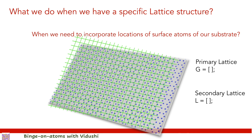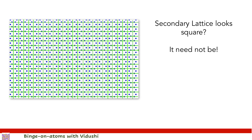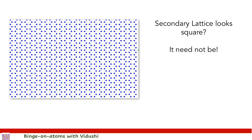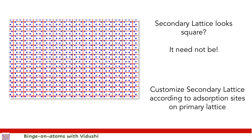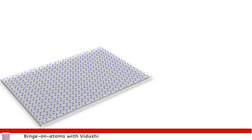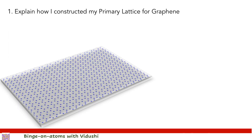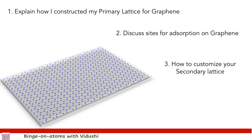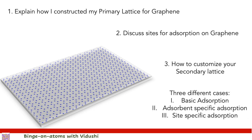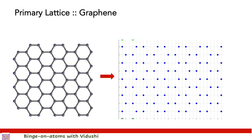Note that for our depiction we have shown the secondary lattice to be like a square, but it need not be — the secondary lattice will be constructed based on the sites of adsorption on the primary lattice, so it can be customized accordingly. In this video I will first explain how I constructed the primary lattice for graphene, then discuss the sites of adsorption on the graphene surface, and then describe how to customize the secondary lattice. I will follow three cases: basic adsorption, adsorbent-specific adsorption, and site-specific adsorption.